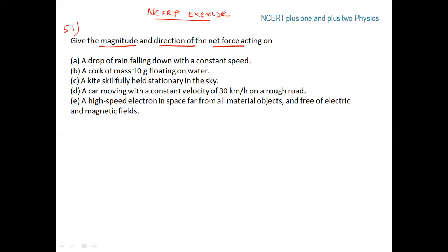The first situation: a drop of rain falling down with constant speed. The acceleration is zero. According to Newton's first law, if acceleration is zero and the body is moving with uniform speed, the net force on that body should be equal to zero.